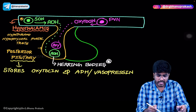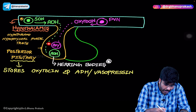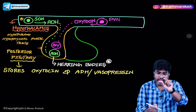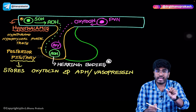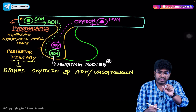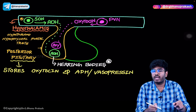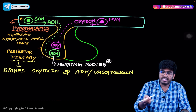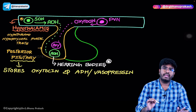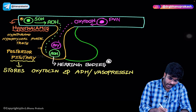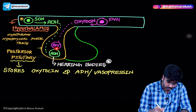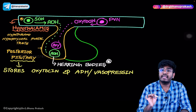These nerve axons coming down from the hypothalamus to the posterior pituitary are called the hypothalamo-hypophysial tracts. 'Hypophysis' is just another name for the pituitary. A group of axons in the central nervous system is called a tract. So the hypothalamo-hypophysial tracts are the connection between the hypothalamus and the posterior pituitary.